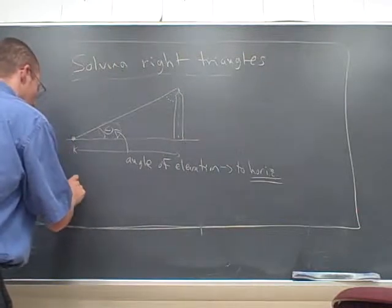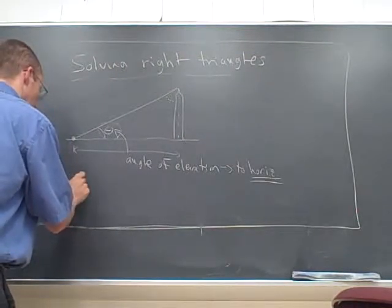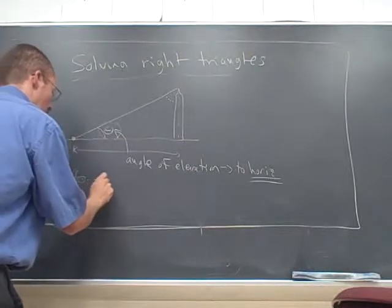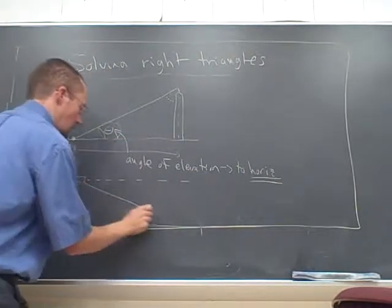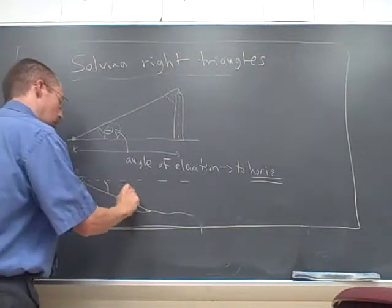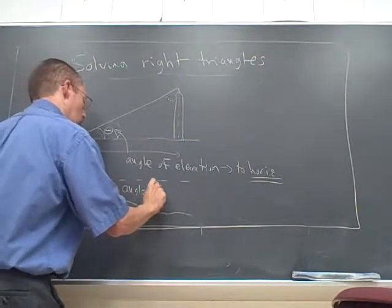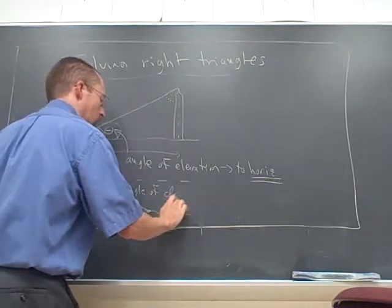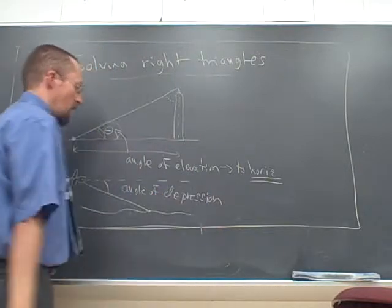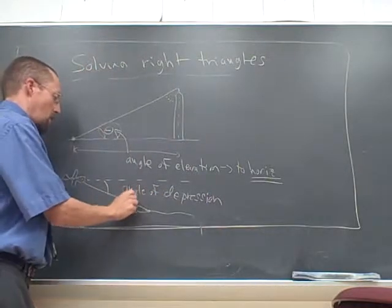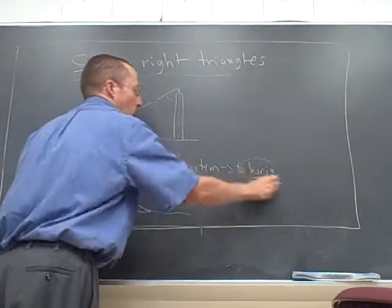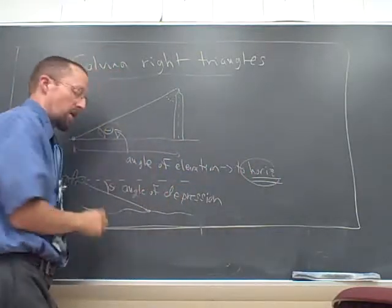The corresponding thing, if it's below, is if I'm in a plane, and I'm looking down on the ground at something on the ground. This guy is called the angle of depression, which I always think sounds like a pretty good emo band or something. The angle of depression is always, always, always measured to the horizontal. Both of these guys are measured compared to the horizontal.